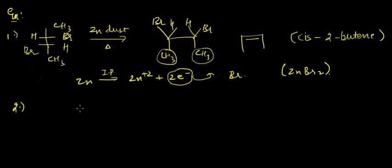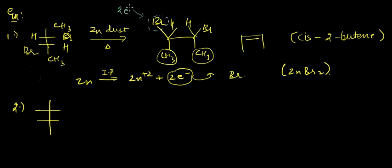By the way, I forgot to explain how the two electrons come into the picture and how ZnBr₂ forms. When you look at the bond breaking: the Br comes in contact with two electrons from Zn, and we leave as Br⁻. The bond formation of ZnBr₂ happens afterward.